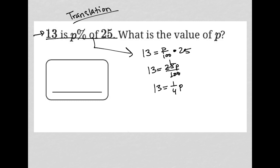25 goes into itself once, into 100 four times. And I can then multiply both sides by four, so I'd have 52, which is four times 13, equals P. So our answer here is 52.